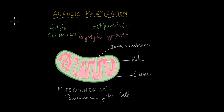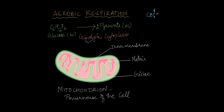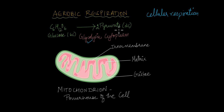Now you can answer the earlier question — which process is common between both aerobic and anaerobic mechanisms of respiration? If you guessed glycolysis, you are right. Glycolysis is the first step in cellular respiration, be it anaerobic or aerobic, converting glucose to two molecules of pyruvate.